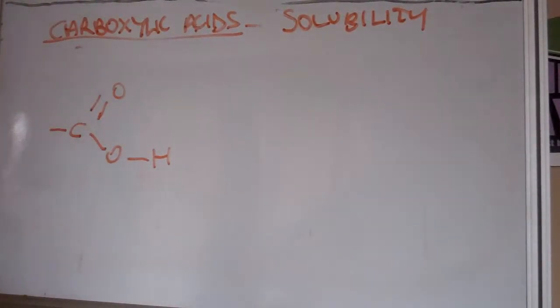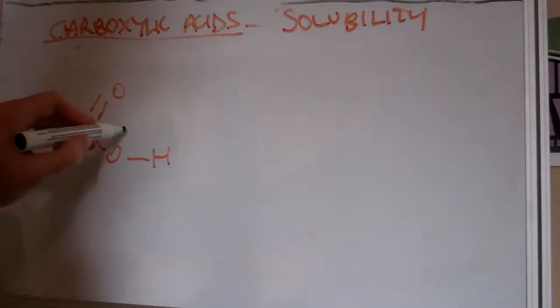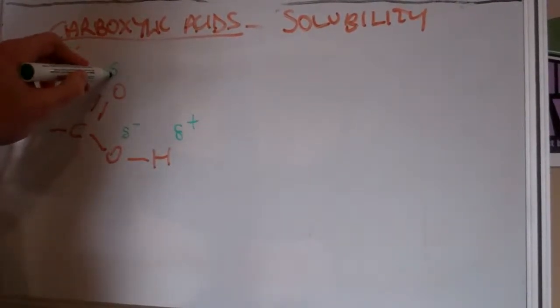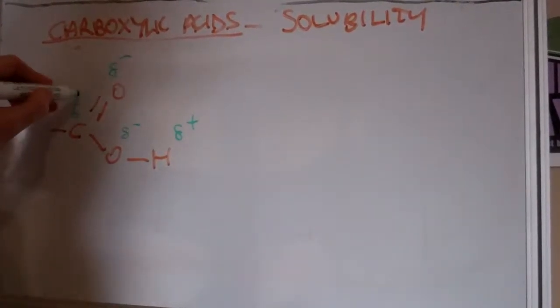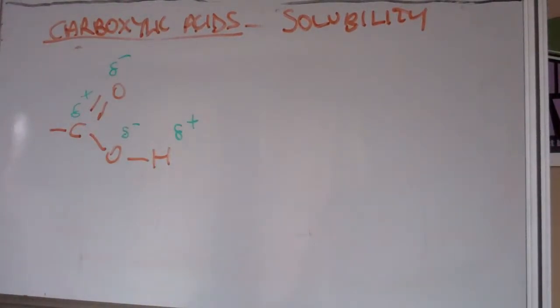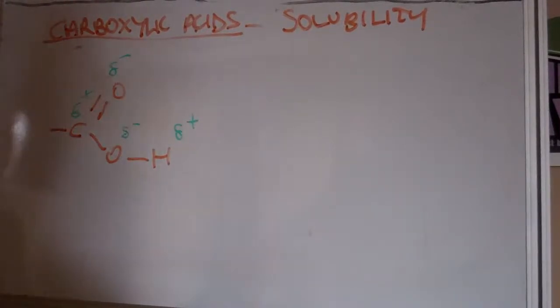If we look at carboxylic acid group we can label the polarity. So we've got some partial charges, the OH group is polar, the CO group is polar due to the differences in electronegativity.